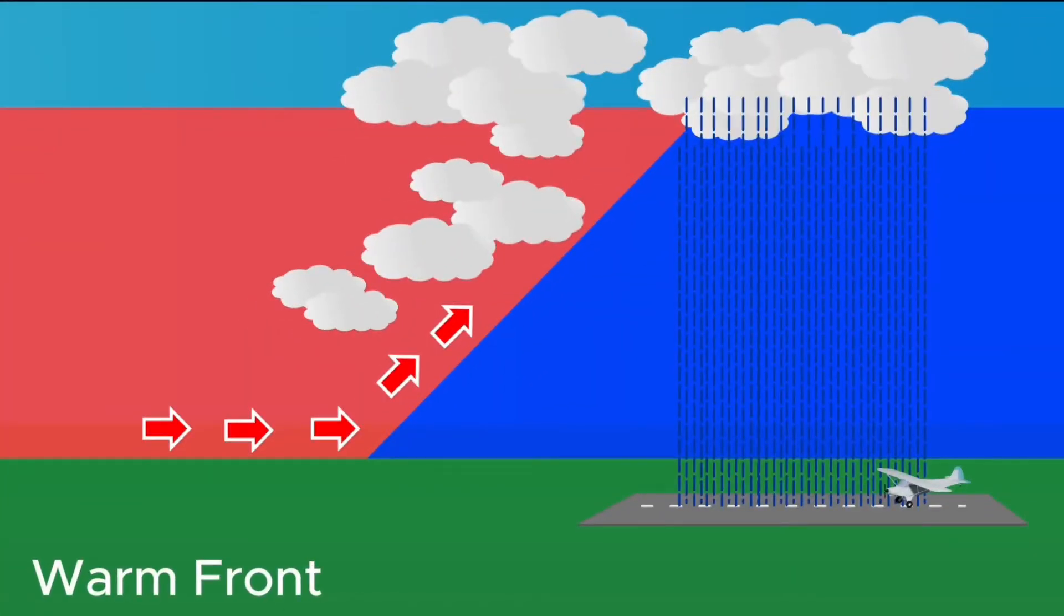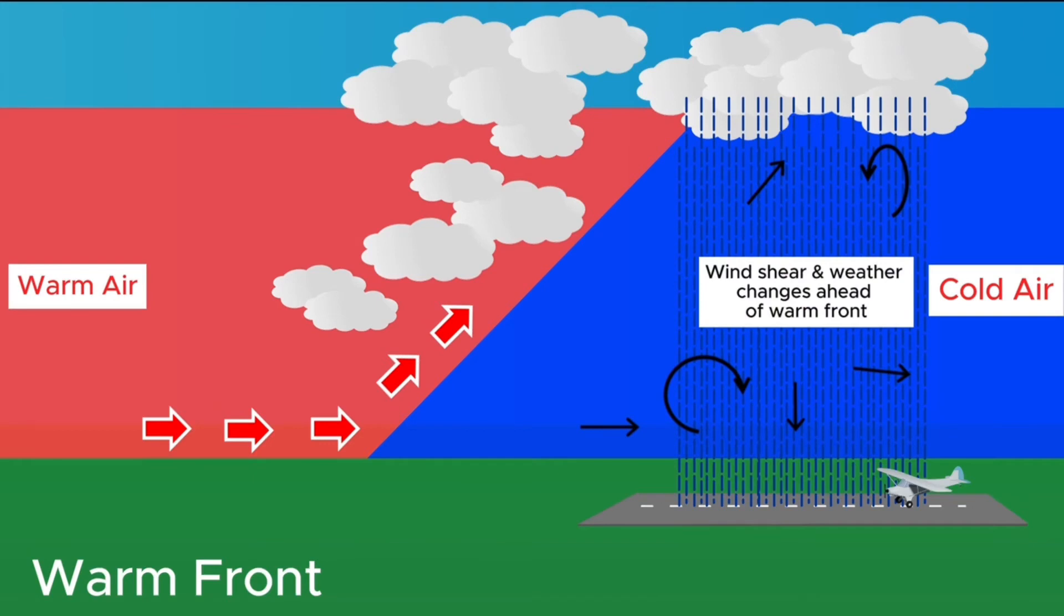Wind shear is not just found near thunderstorms. It can also commonly be found in frontal zones where the wind speed and direction changes across the front. However, when you have a warm front approaching, the most critical frontal activity occurs ahead of the front. So if you are at an airport as a warm front approaches, you can expect changing weather and wind shear prior to the front even arriving.